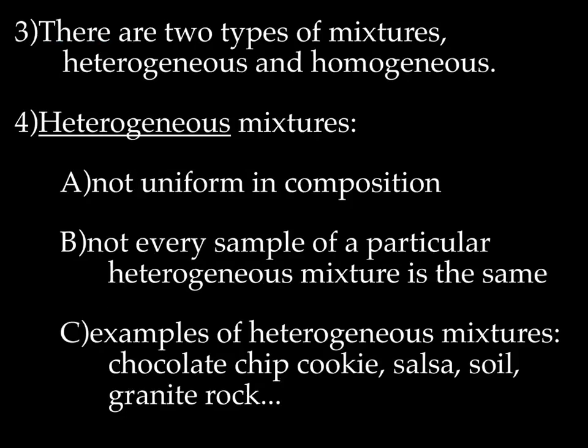There are two types of mixtures: heterogeneous, which means different, and homogeneous, which means the same. Heterogeneous mixtures are not uniform in composition — not every sample of a particular heterogeneous mixture is the same. Examples of heterogeneous mixtures are chocolate chip cookies, salsa, soil, and granite rock. Think about a chocolate chip cookie, particularly a homemade one: you could take a bite and get just cookie with no chocolate, or another bite with four or five chocolate pieces and just a little bit of cookie. Each bite is slightly different — that's what is meant by not uniform in composition.